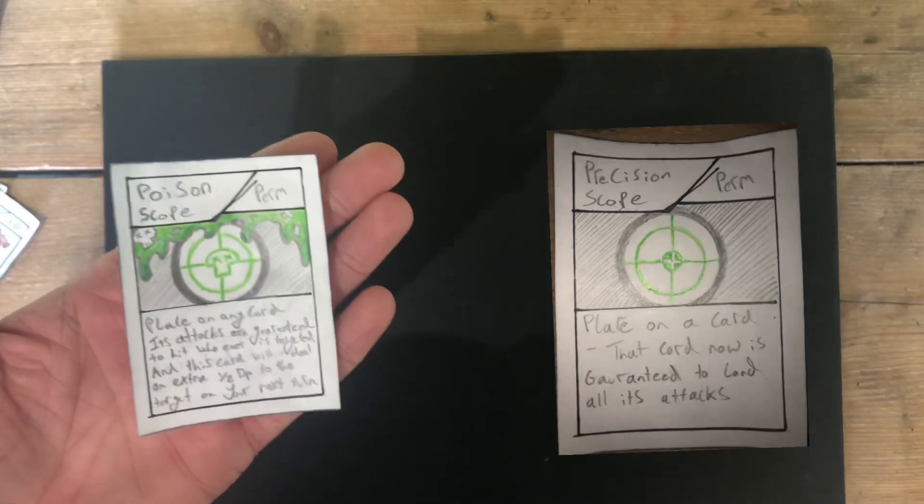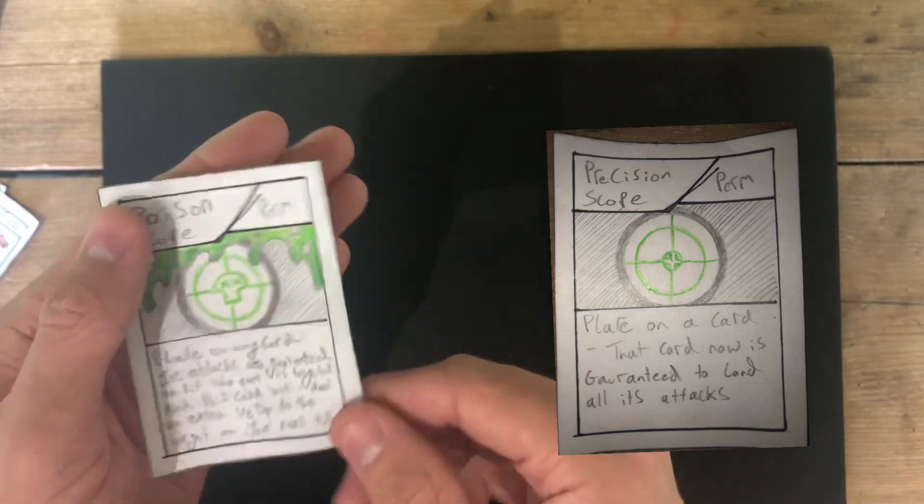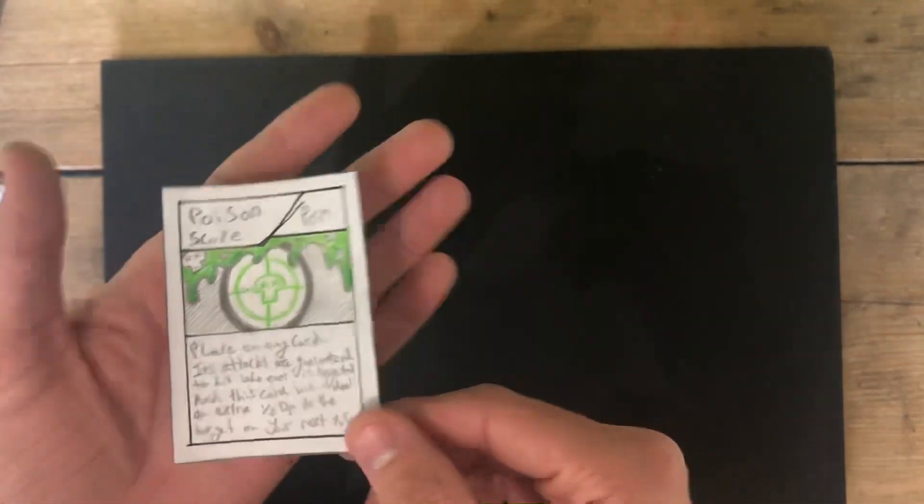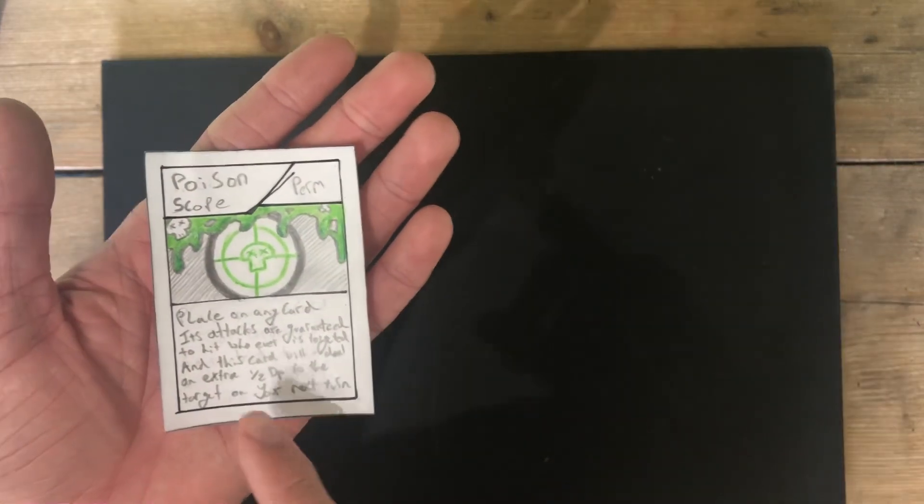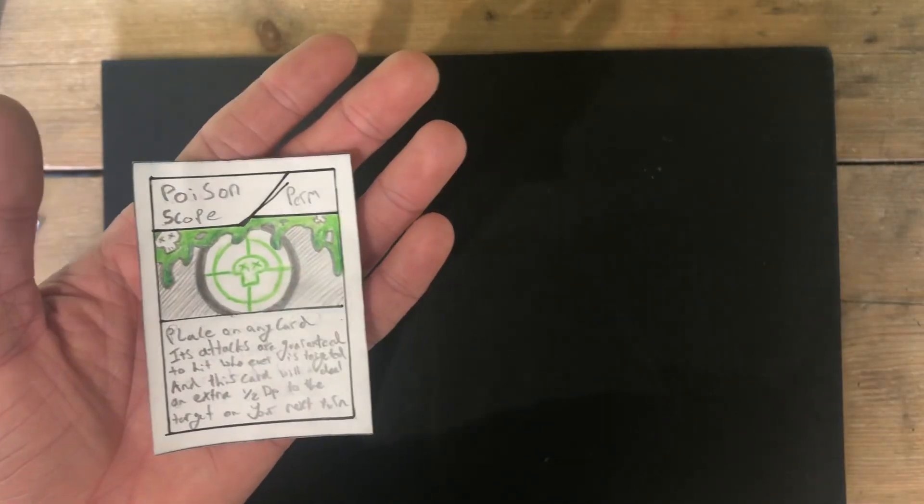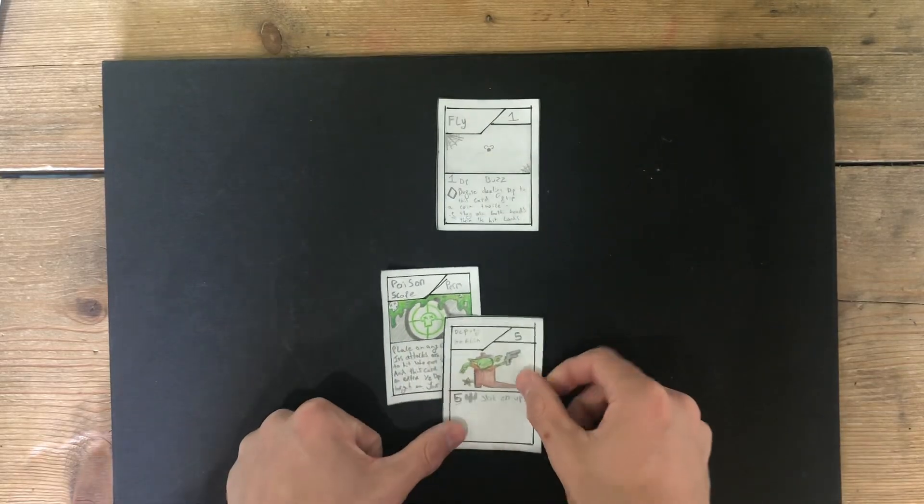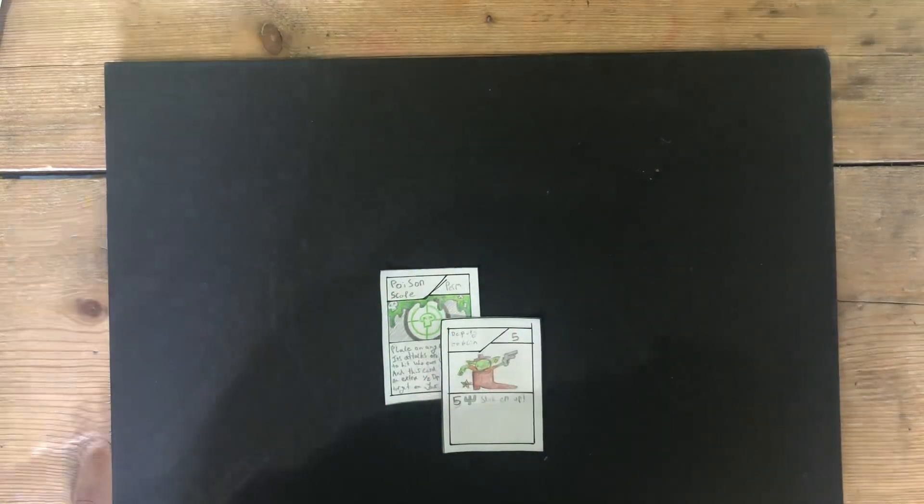The last change to an old card is the Precision Scope, being remade into the Poison Scope. You'll play it on any card, and their attacks are guaranteed to hit whoever they attack. The Poison Scope's first ability allows it so my Deputy Goblin will guarantee to hit the fly, ignoring the fact that I have to flip for it.